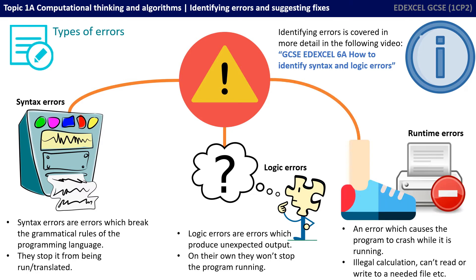The third type of error are known as runtime errors. This is an error which causes a program to crash while it's running. Now this is different to logic errors. You could have a situation where your program is syntactically correct and is also free from all logic errors, so surely you're thinking my program should always work. Well, there can be situations where your program can still crash.